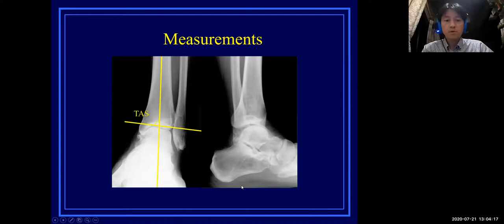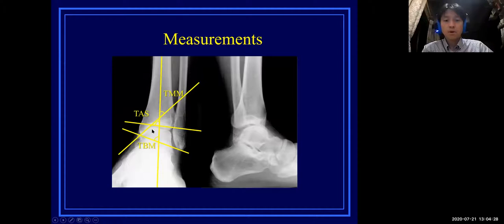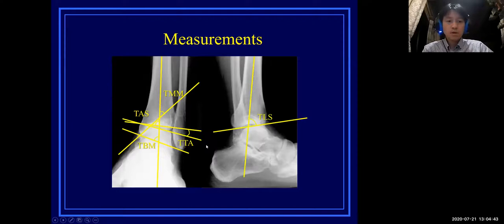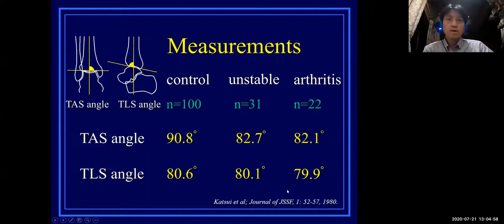Conventional measurements are useful in AP radiography. The angle between the tibial axis and distal tibial articular surface is defined as TAS, the medial malleolar surface as TMM, and the connecting line between the distal tips of both malleoli is TBM. The talar tilting angle is also important. DLS is defined as the angle between the tibial axis and the joint line of the distal articular surface in the lateral view.